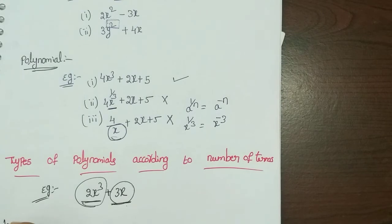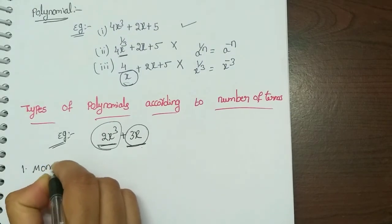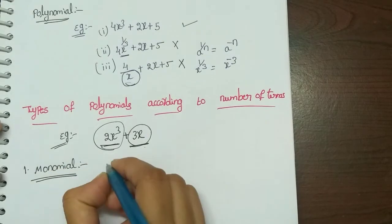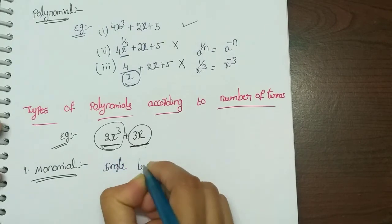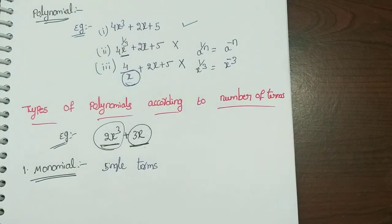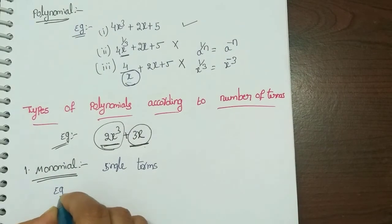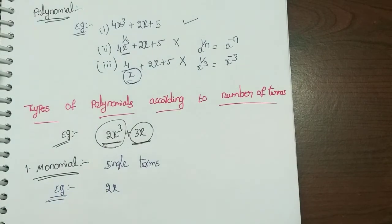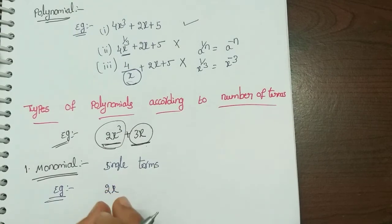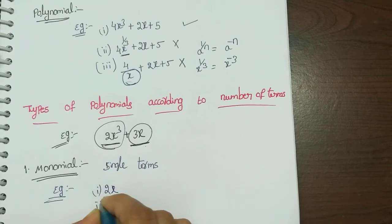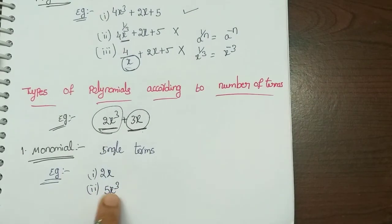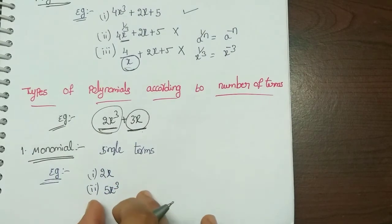First is monomial. A monomial is a polynomial with only a single term. For example, 2x is a single term — it is a monomial. Another example: 5x³ is also a monomial. If there is just one term, it is a monomial.